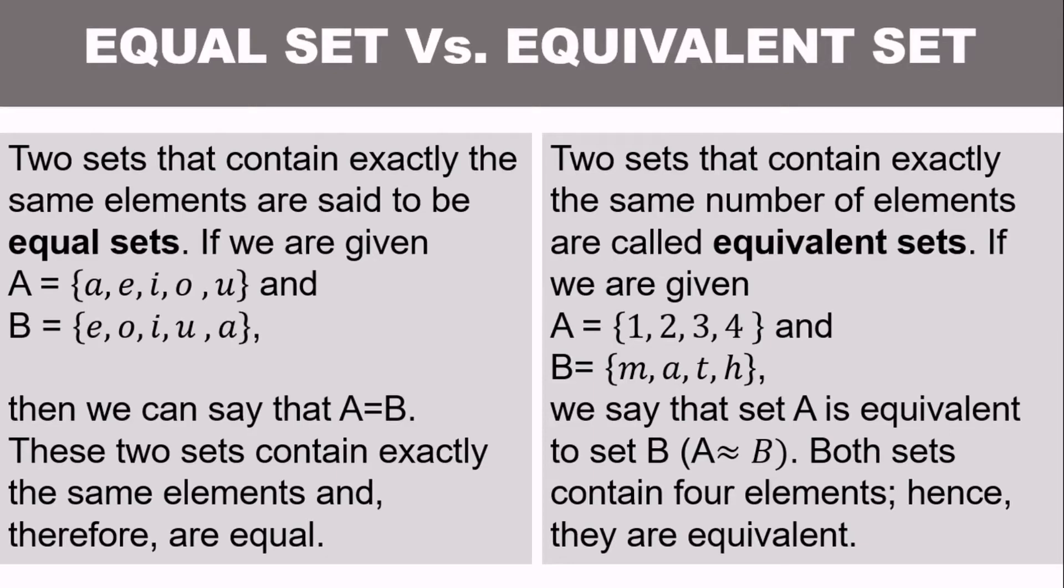For equivalent set, you just need to satisfy the number of elements. Set A must have the same number of elements as set B. Now, the question is: the equal set example with A, E, I, O, U and set B, would we consider it as an equivalent set? The answer for that is yes. But the example in equivalent set with 1, 2, 3, 4 and M, A, T, H, is that equal set? No. That's the difference between the two.